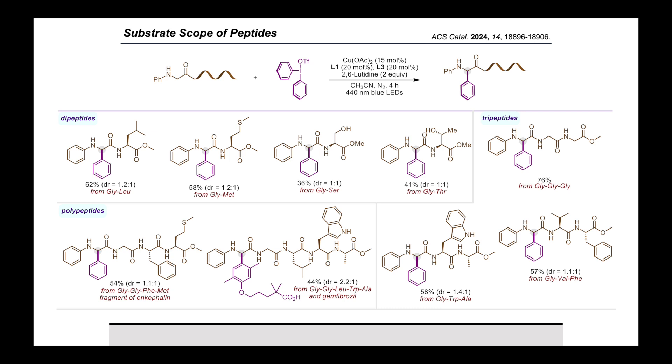After observing all these results, then we tested different peptide derivatives, from dipeptide to polypeptide in the reaction. Pleasingly, a variety of glycine-derived dipeptide, tripeptide, and polypeptides with functionally orchestrated side chains, underwent site-selective arylation at the alpha-position of glycine carbonyl to offer corresponding cross-coupled products in moderate to good yields, while preserving the integrity of other amino residues.